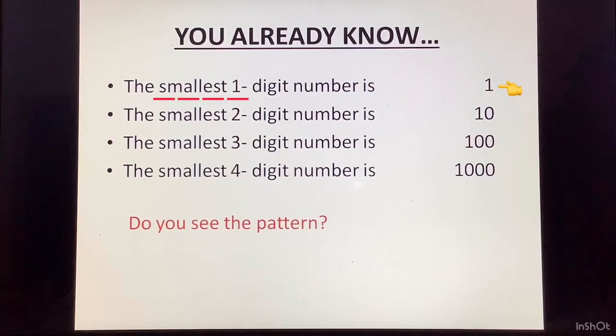For one digit, we have 1. For two digit, we have 1 followed by 1 zero. For smallest three digit number, we have 1 followed by 2 zeros. For smallest four digit number, we have 1 followed by 3 zeros.